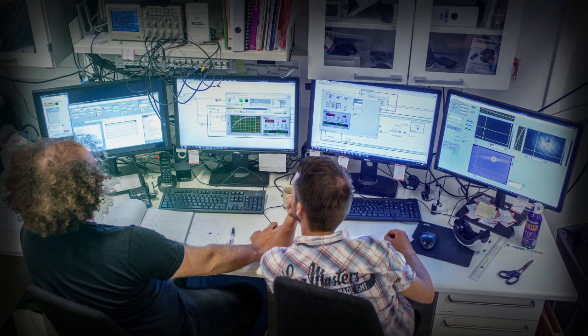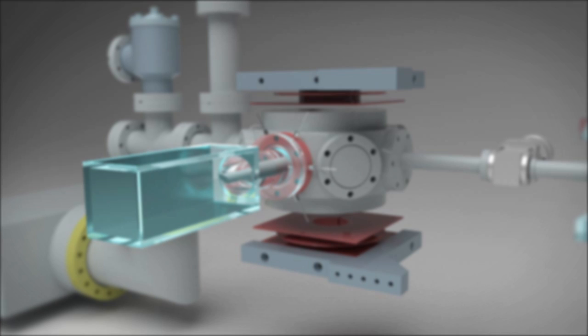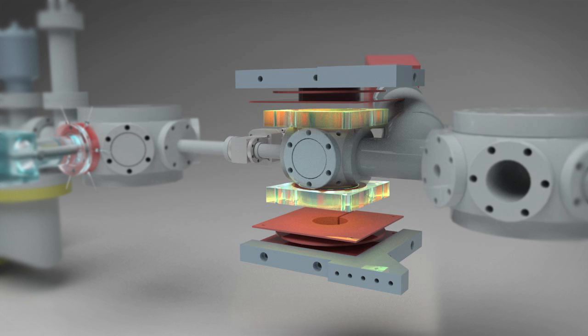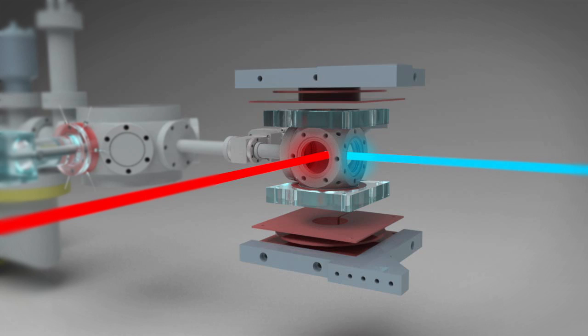The experiment itself looks like this. A cold cloud of atoms is pre-cooled in the first chamber and transported to the second chamber with the help of magnetic fields. In the second chamber, the final cooling happens with a magnetic field and two laser beams.